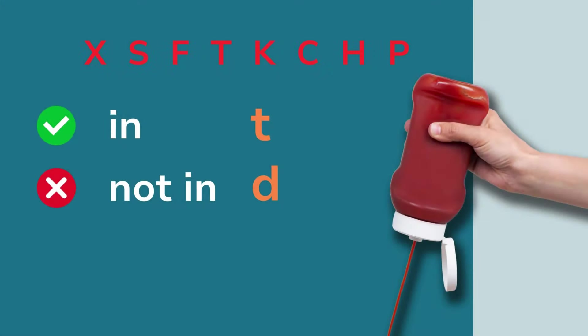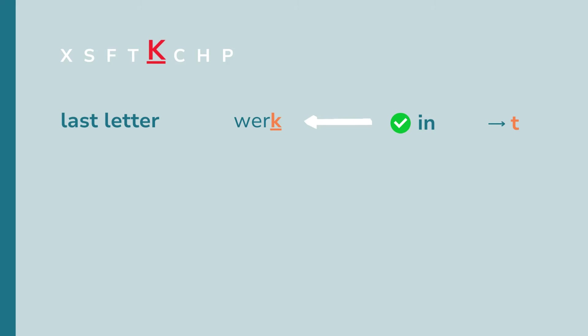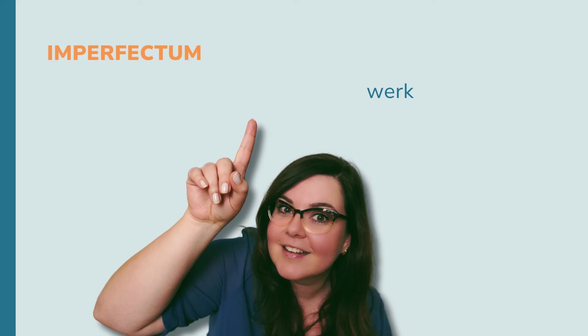You need to see if the last letter is part of ex soft ketchup. It is — the k is in the ketchup. What does this mean? You need to work with the t when the letter is in it. When it's not, work with the d. Since the k is in it, we will work with the t. This is super important when forming the imperfectum or perfectum.